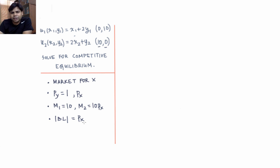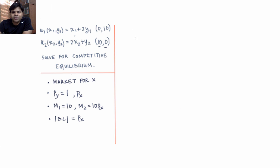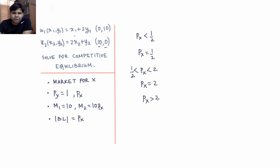Given the utility functions, the slope of the indifference curve of individual 1 is 1/2 and the slope of individual 2's indifference curve is 2. We divide the search for competitive equilibrium price into five possibilities: px less than 1/2, px equal to 1/2, px between 1/2 and 2, px equal to 2, and px greater than 2.